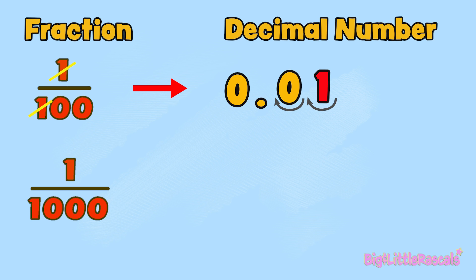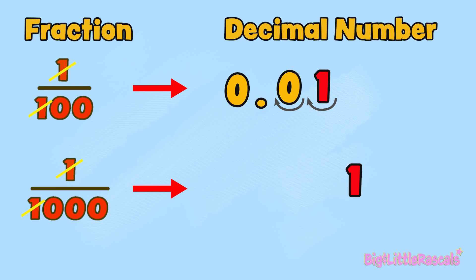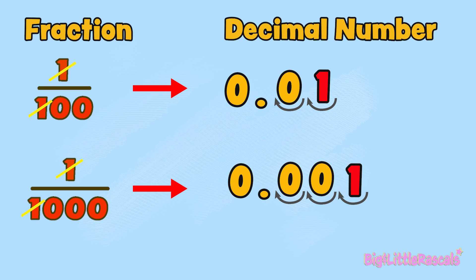Now let's see 1/1,000. Let's divide 1 at the top with 1 at the bottom — it gives us 1. Because there are still 3 zeros left at the bottom, we need to jump 3 times to the left: 1, 2, and 3. We add 0 for each empty jump, then add the decimal point after that, and add 0 at the front, as this is less than 1 whole. Easy!